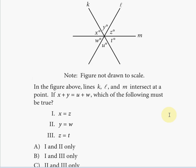So this is problem number 11, practice test 3, section 3, no calculator. This is a geometry problem. It gives you three line segments intersecting at the same point.